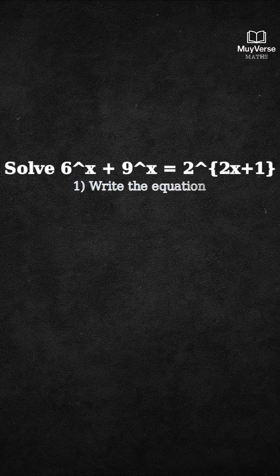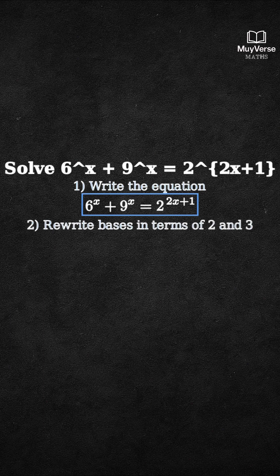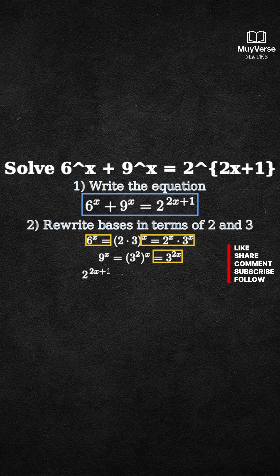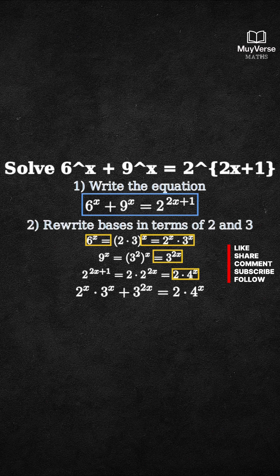Step 1. Write the equation exactly as given. Step 2. Rewrite each term using bases 2 and 3. 6 to the x equals 2 to the x times 3 to the x. 9 to the x equals 3 to the power 2x. 2 to the power 2x plus 1 equals 2 times 4 to the x. Now assemble these into a single line.